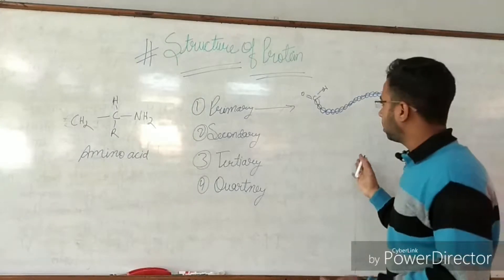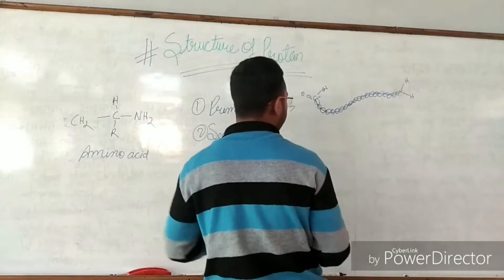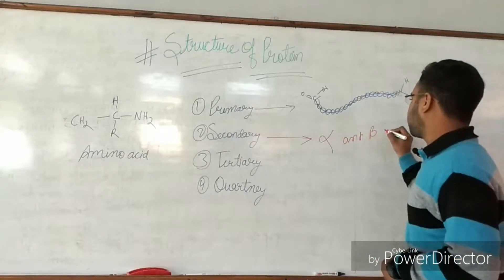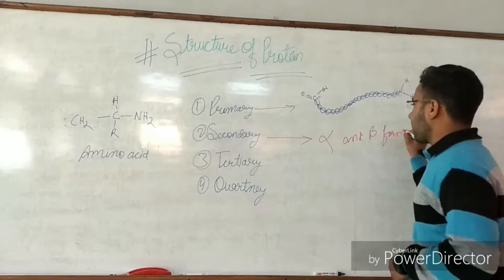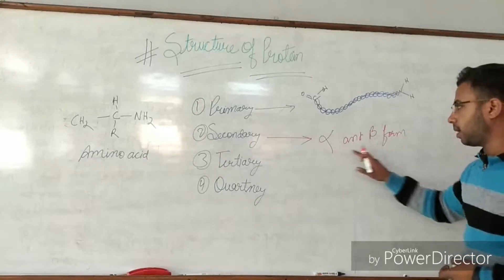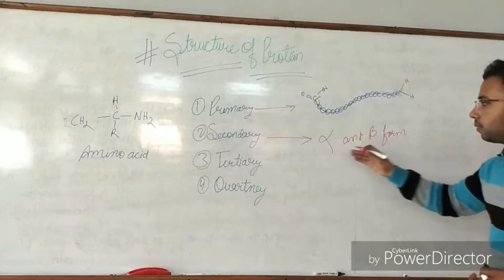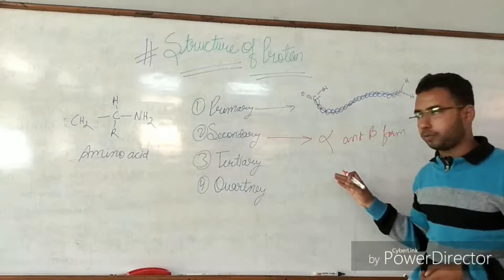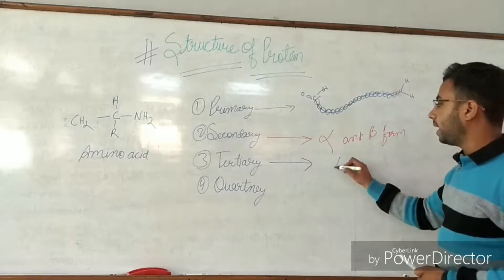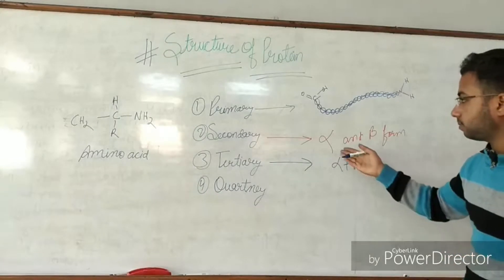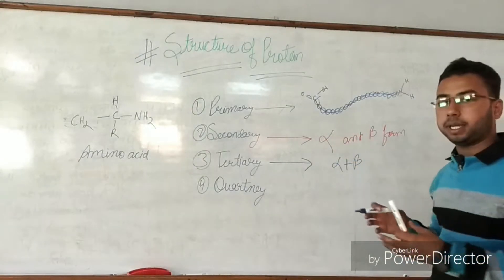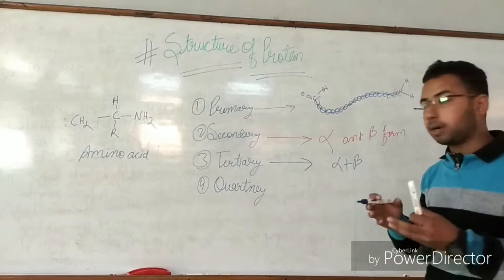This is a linear and simple chain which forms the primary structure. The secondary structure has two forms: alpha and beta. Alpha is known as alpha helix and beta is in the form of a beta sheet. The tertiary structure is a mixture of alpha helix plus beta sheet — both secondary protein forms combine to make a tertiary structure.